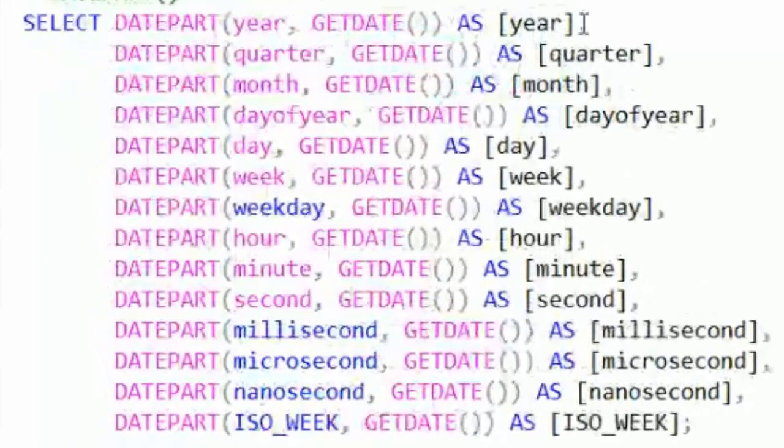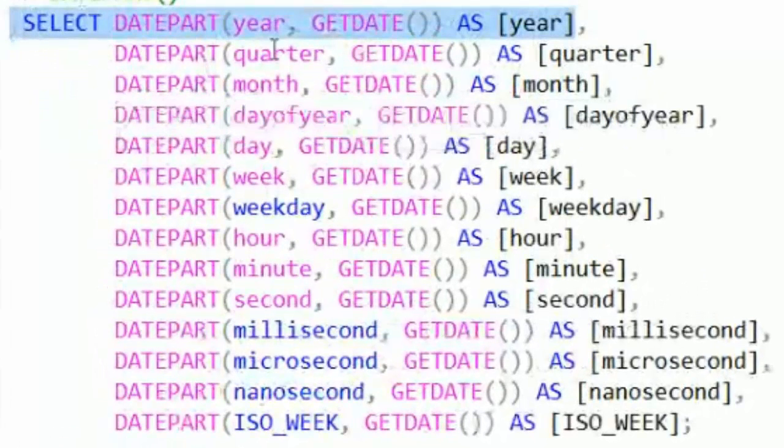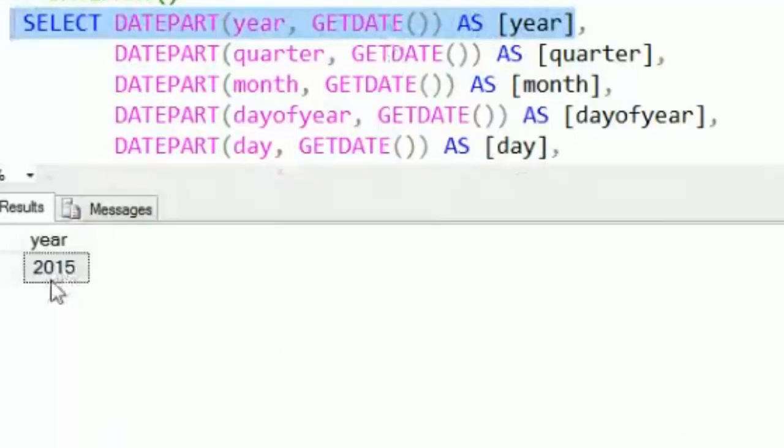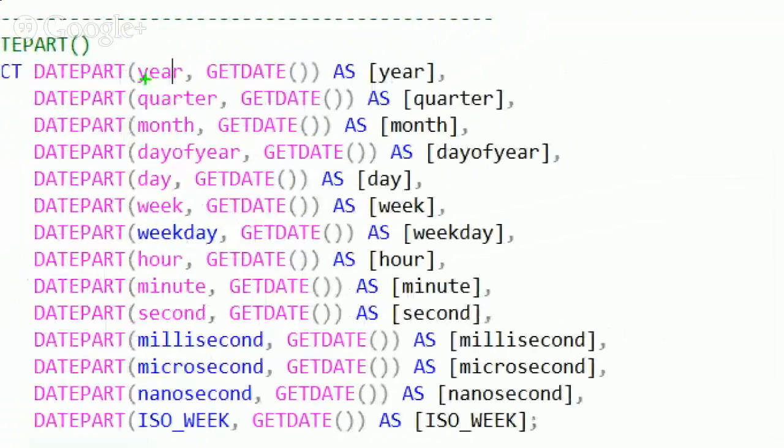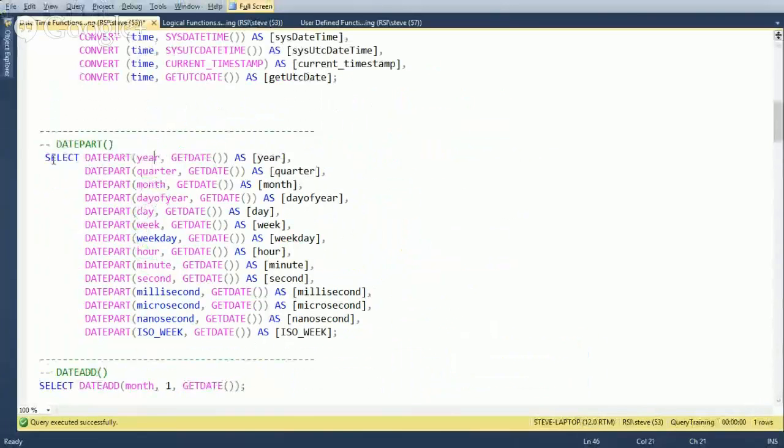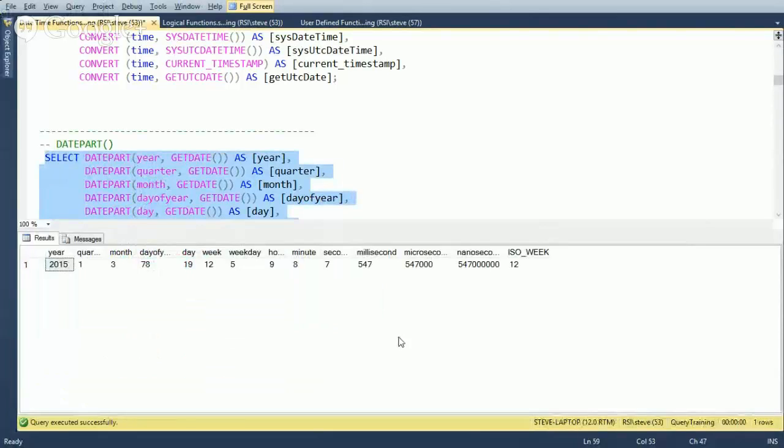I've broken it out in a number of functions. I'm just going to highlight the first part here and run DATEPART year for GETDATE which is right now. When we run that, we can see it takes the date that it's given and it extracts the year from it and gives us 2015. The options we've got here: year, quarter, month, day of year, day, week, weekday. The weekday will give you like Sunday through Saturday day of the week as an integer. And that's the thing - the return value from all of these is an integer.